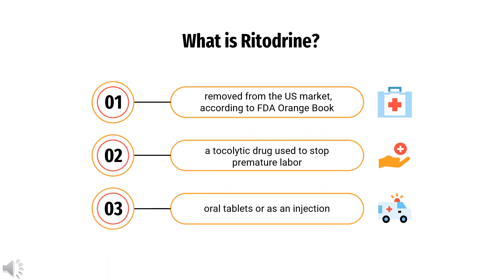Ritadrine is a tocolytic drug used to stop premature labor. This drug has been removed from the U.S. market, according to the FDA Orange Book. It was available in oral tablets or as an injection and was typically used as the hydrochloride salt, Ritadrine hydrochloride.